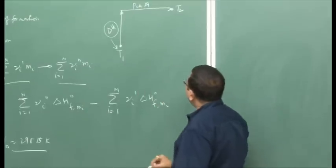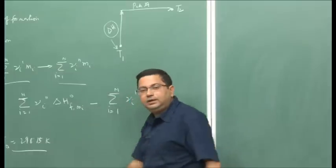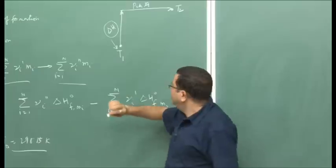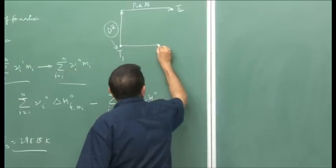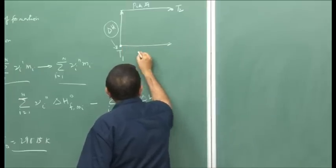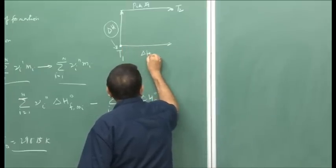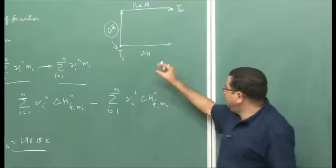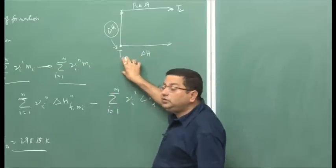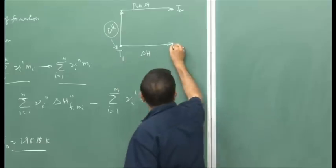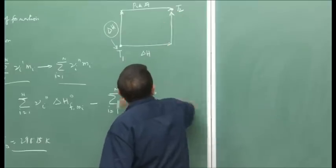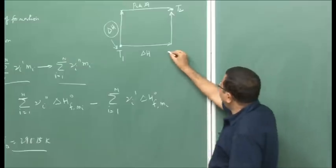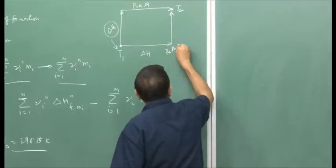Another path — path B — is that the reaction occurs at temperature T1 itself. Because of that, the products are formed and some amount of heat ΔH is liberated. This heat then goes to heat up the products so that they reach temperature T2.